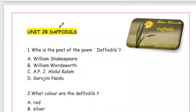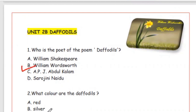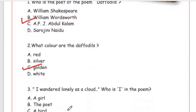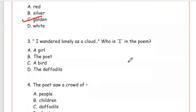Unit 2B: Daffodils. Question 1: Who is the poet of the poem 'Daffodils'? Answer is Option B, William Wordsworth. Question 2: What color were the daffodils? Options: red, silver, golden, white. The right answer is Option C, golden. Question 3: 'I wandered lonely as a cloud' — who is 'I' in the poem? Option B, the poet.